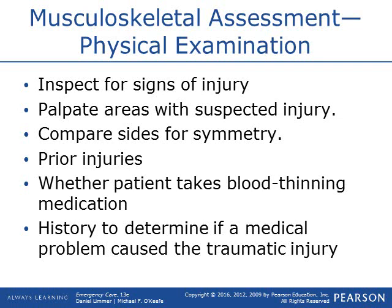Physical exam of musculoskeletal injuries: look for obvious signs of injury first, then palpate. Use DCAP-BTLS on suspected injuries — check for deformities, contusions, abrasions, punctures, burns, tenderness, lacerations, and swelling. Compare left side to right side. Look for prior injuries — hardware implants, major scars suggesting surgeries. Note that surgical joints and bones with hardware are susceptible to recurring injuries. Ask if the patient takes blood-thinning medication, as this can make seemingly simple injuries much worse, whether causing internal or external bleeding.